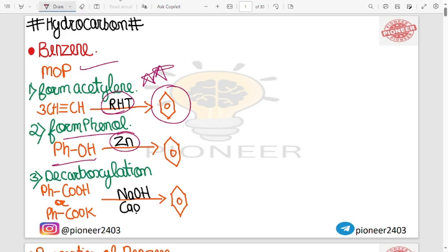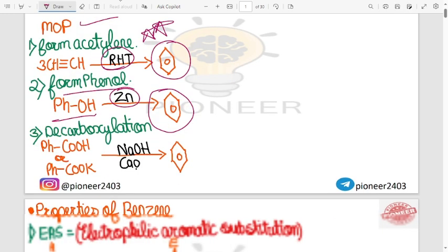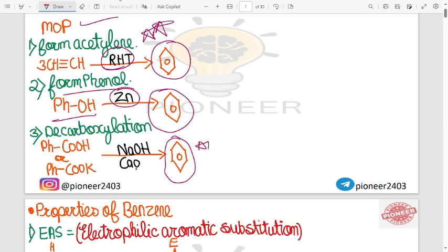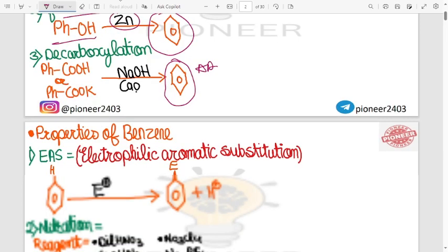You will become benzene from phenol if you do with Zn. If you do the decarboxylation, then you will be able to do benzene. Now the part of the properties of benzene.